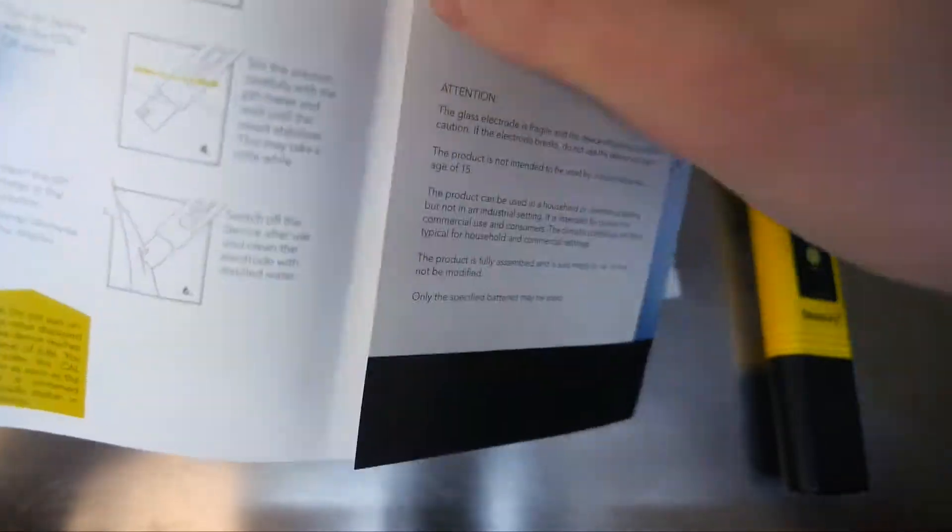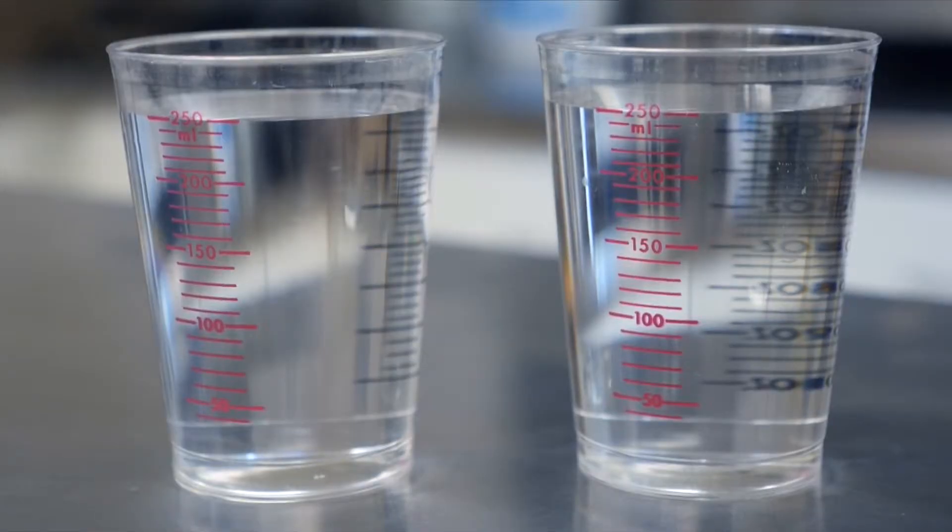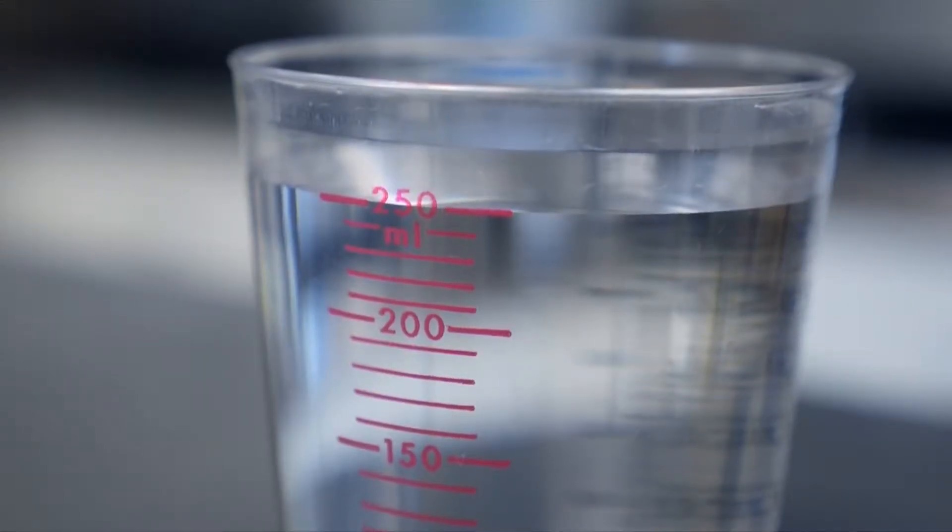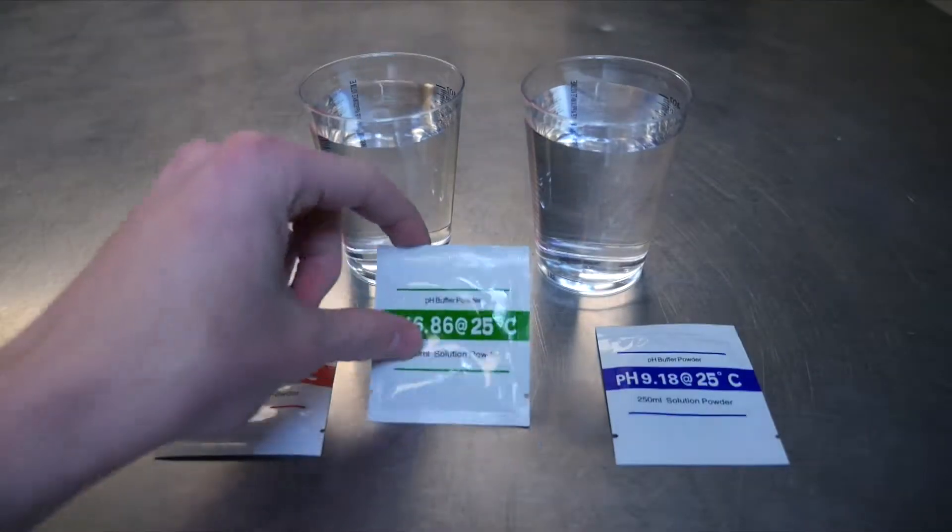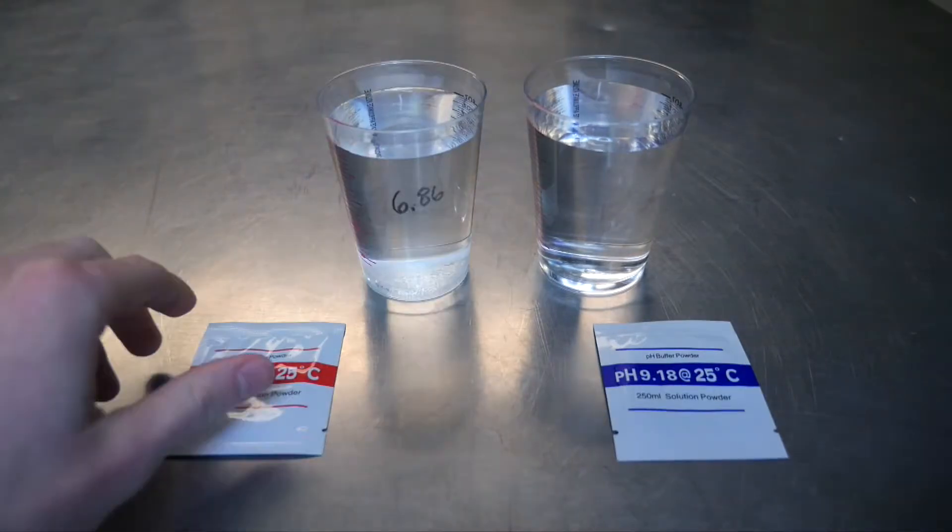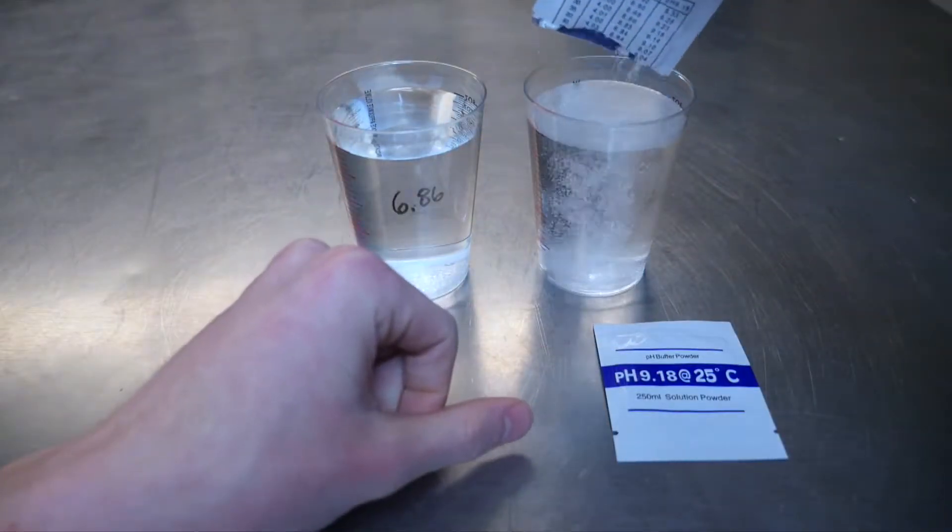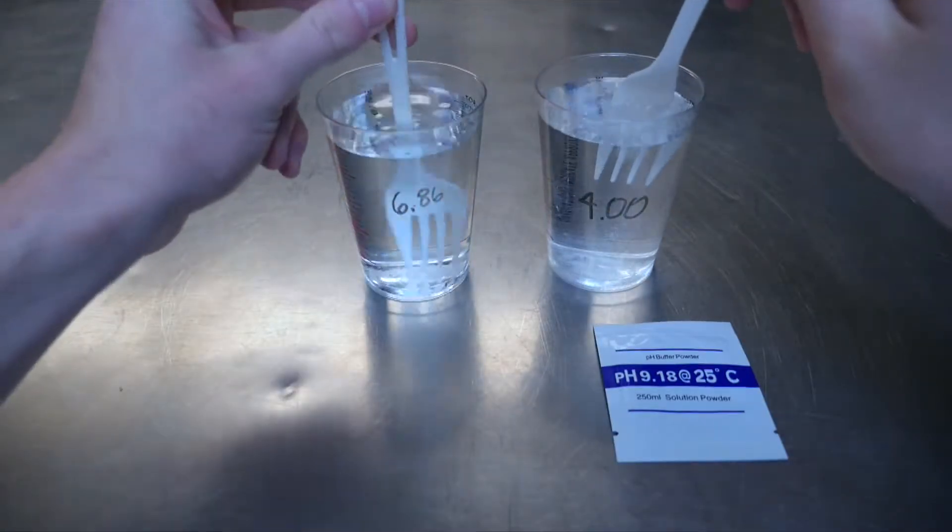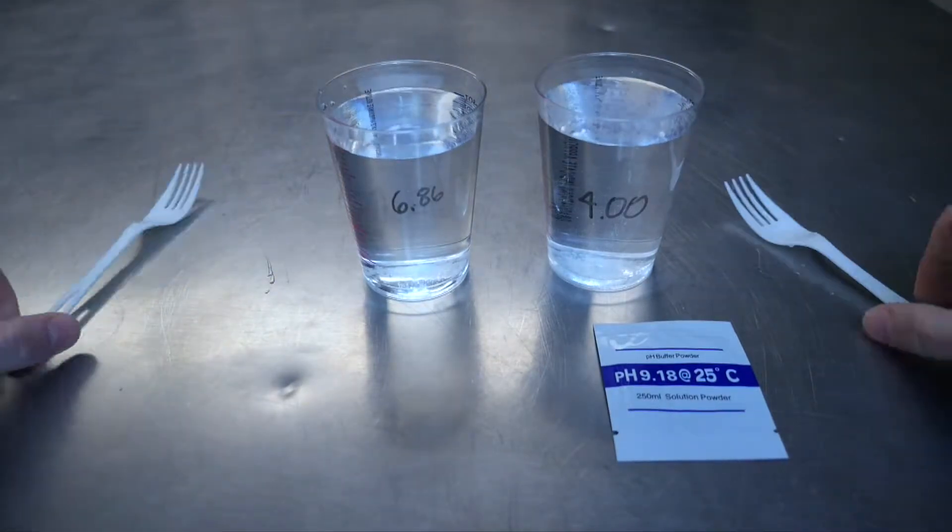Start by filling two glasses each with 250 milliliters of distilled water. Use the 6.86 and 4.0 calibration solutions by pouring each of them into their own glass. Stir both solutions using separate utensils until the powder fully dissolves.